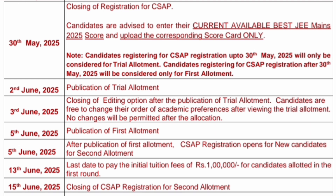2nd June is the publication of the trial allotment result. After that, one day will be given so that you can edit your option entries. After publication of the trial allotment, you can change your option entry, and no changes are permitted after the allocation. So you have to be very clear with your order of academic preference.